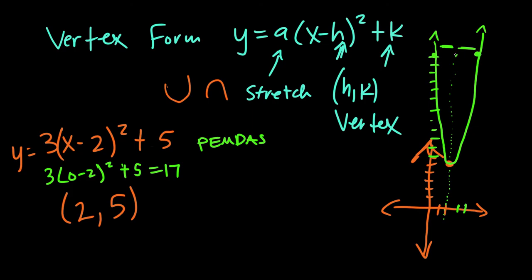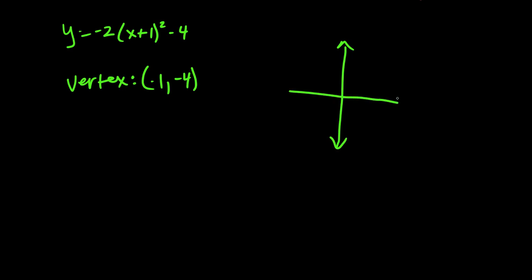Let's try another one. Okay, so what if we're given y equals negative 2(x+1)² - 4? So the first step is pull out the vertex, and so the vertex: we change the sign and then we keep the sign. So this one we have (-1, -4). Now we draw our axes. So we go left 1, down 4. Okay, that's our vertex.